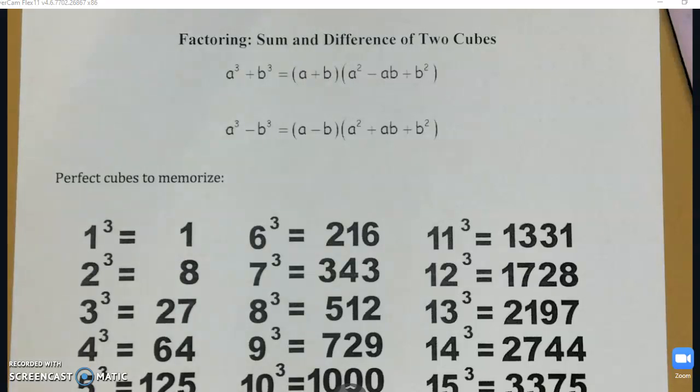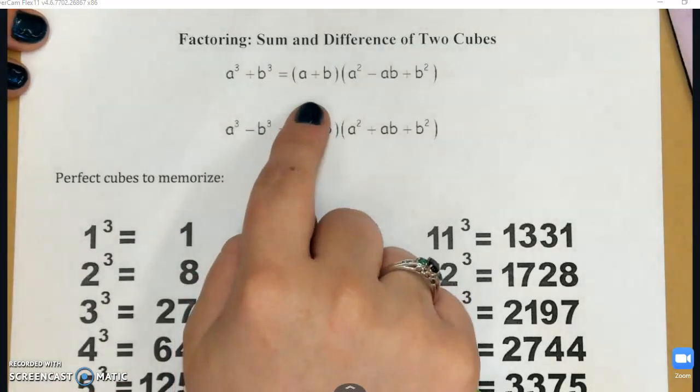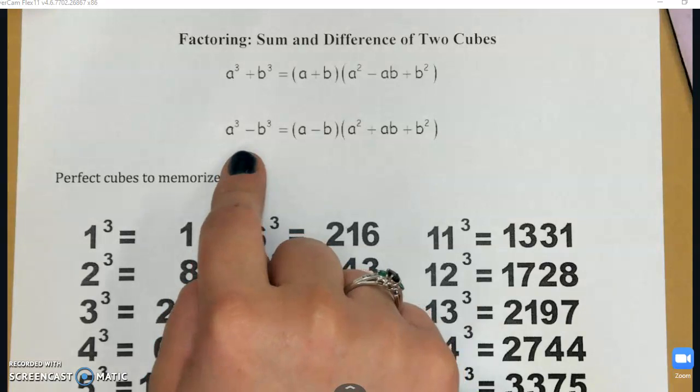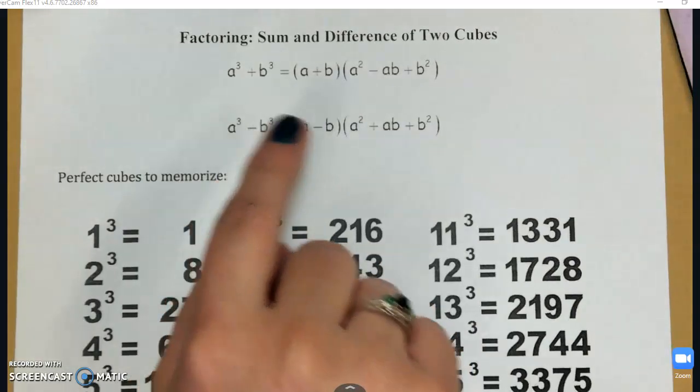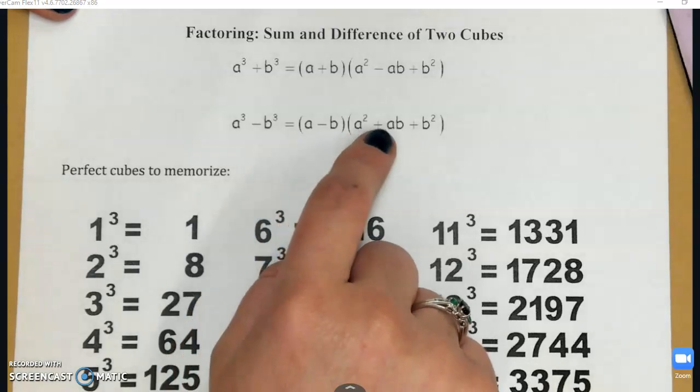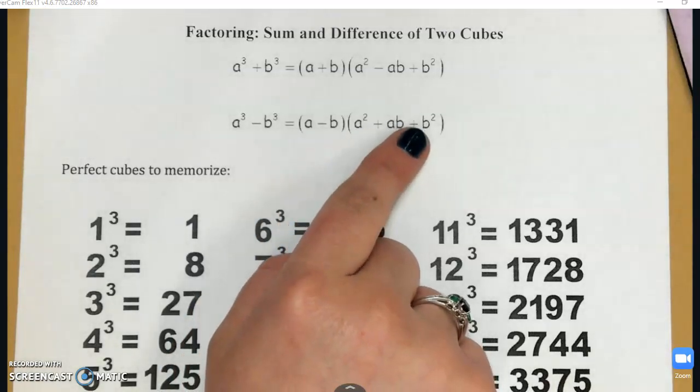So let's talk about what those formulas are. If I have a³ + b³, that factors out to (a + b)(a² - ab + b²). And if I have a³ - b³, that factors out to (a - b)(a² + ab + b²). So these are formulas you're going to want to memorize.